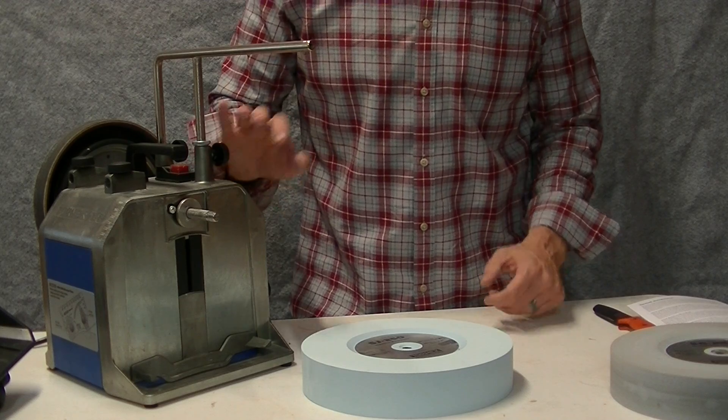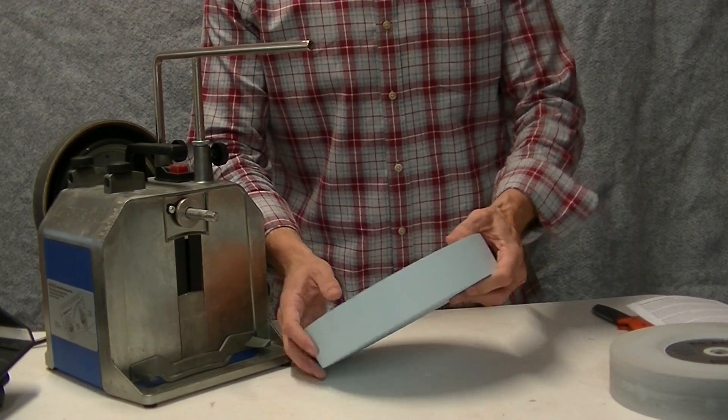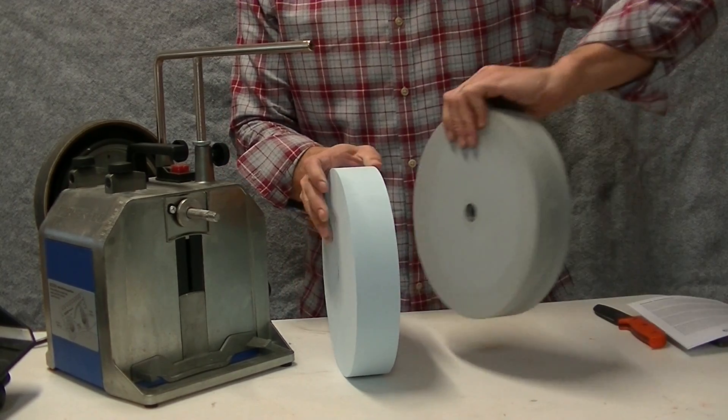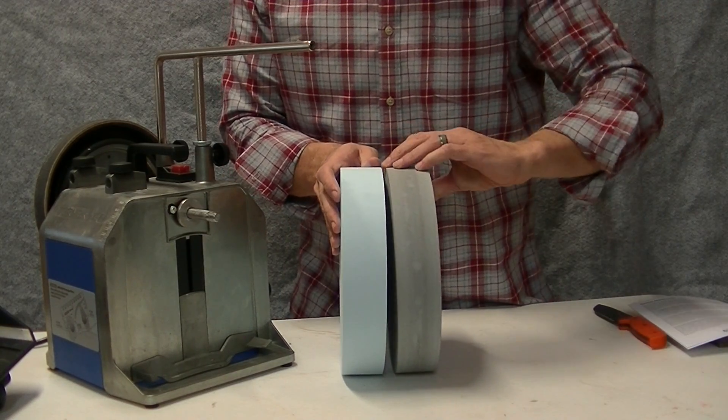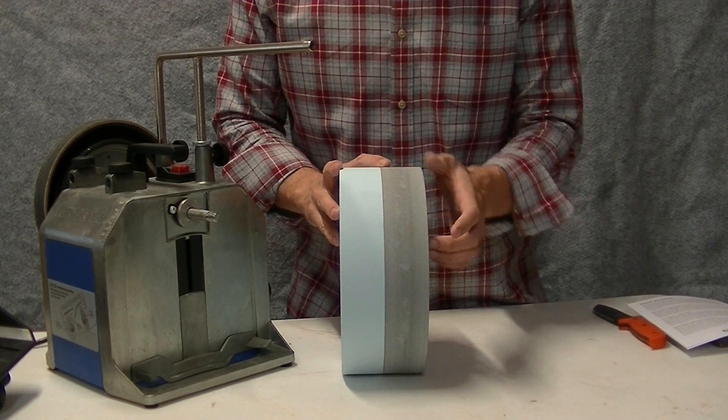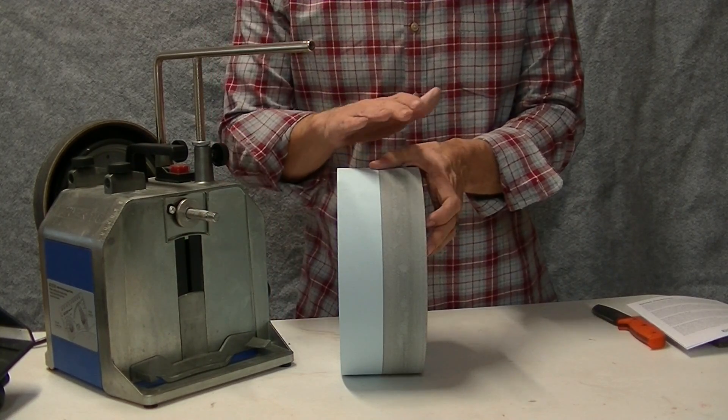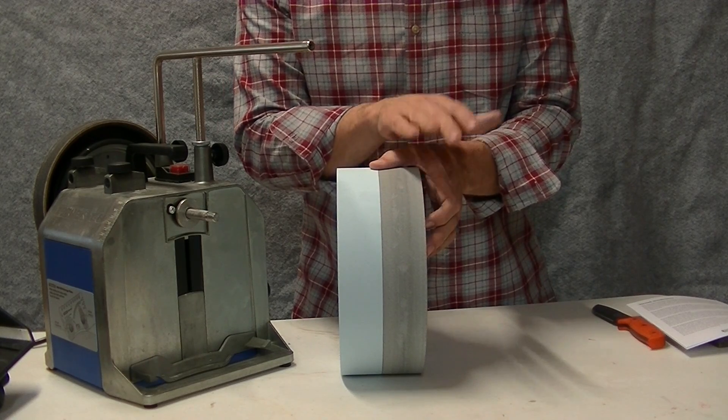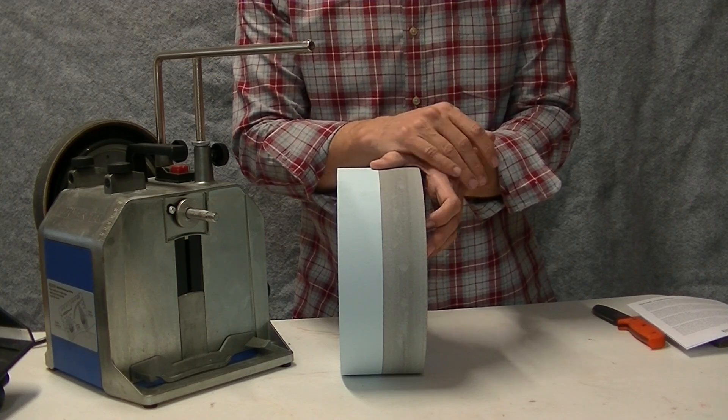Alright, since I've already done a video on this Tormek T8, this is not going to be a review of that system. However, I did want to run you through just real quickly. This is a 10 inch stone. On the left here, excuse me, I guess it's your right here is the normal stone that it comes with. It goes from 220 grit up to a thousand grit. And I'll explain that here in a minute.